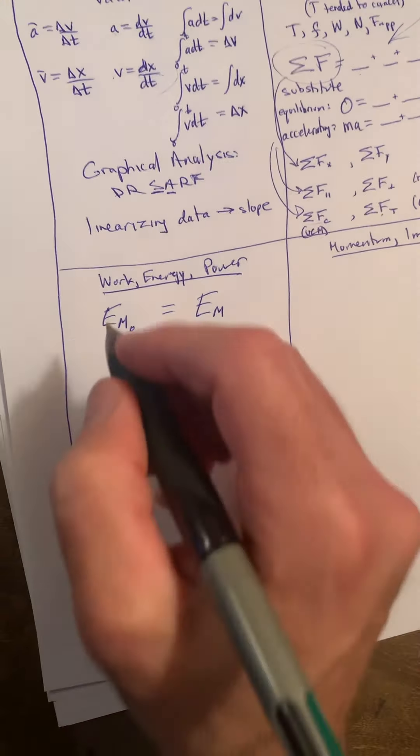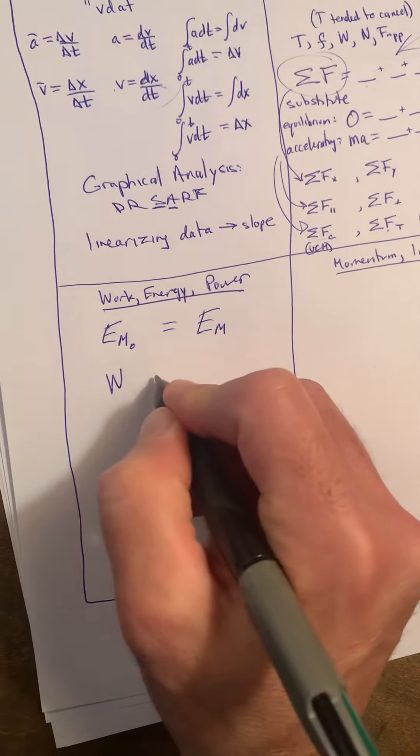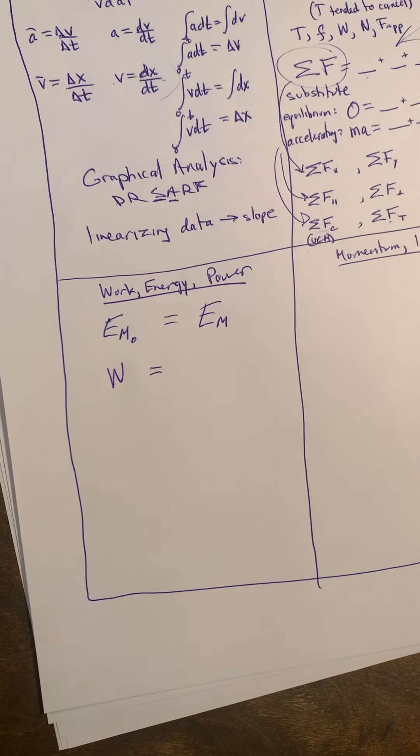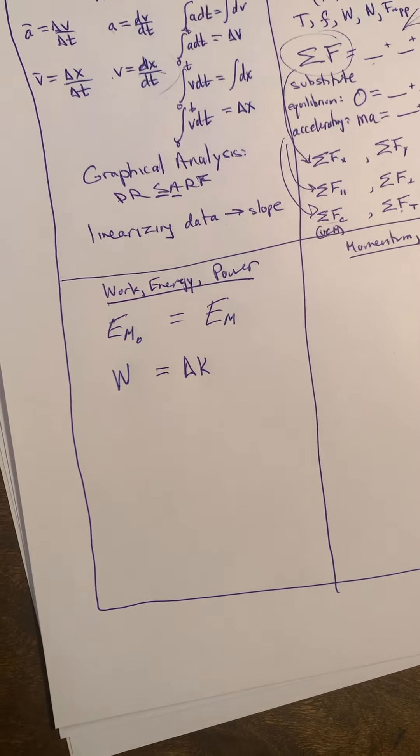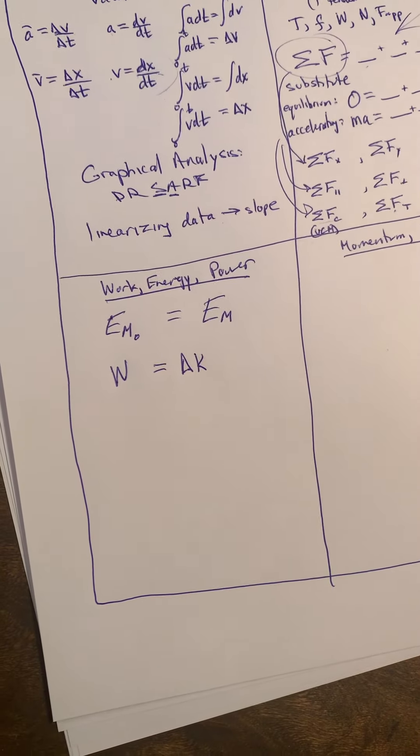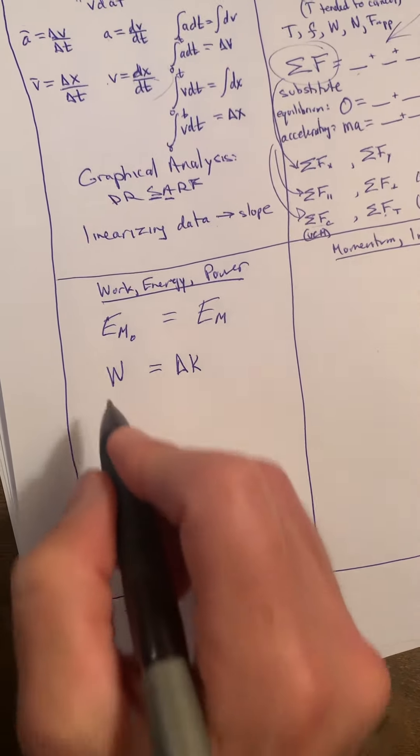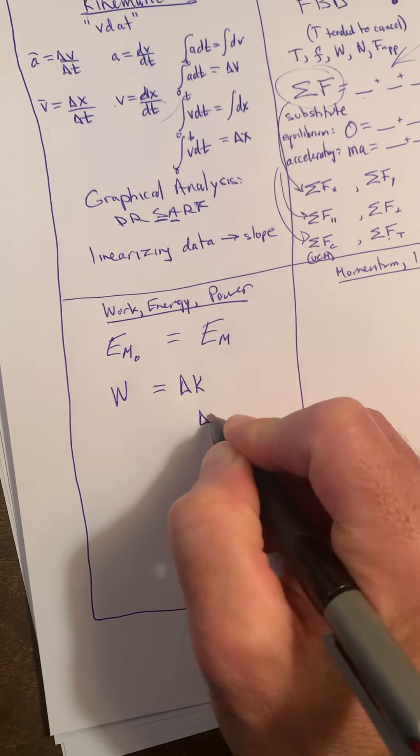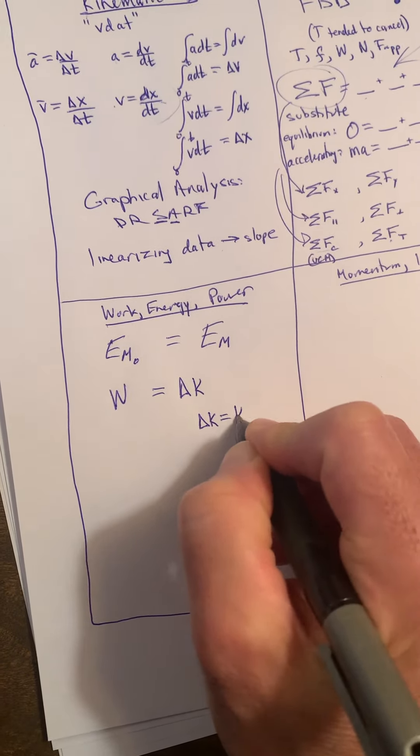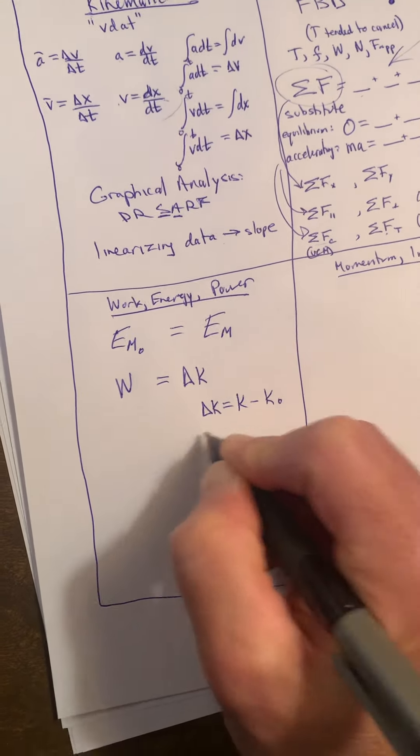We tended to introduce our work. Work done by some external or non-conservative force here led to a change in kinetic energy of our system, and so that was a common piece we used. We then often would pull in here, oh just as a reminder, be careful with your deltas. So Δk is k final minus k initial.